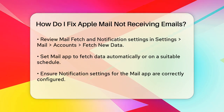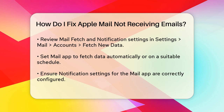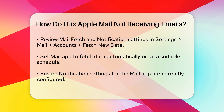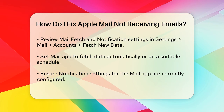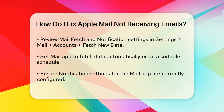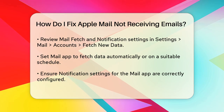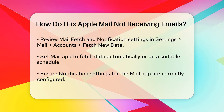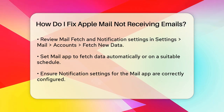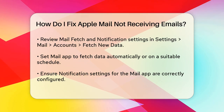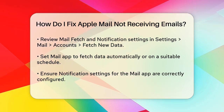Check your mail fetch and notification settings. Go to Settings, Mail, then tap Accounts, and select Fetch New Data. Here, you can choose how often the mail app fetches new data. Make sure the settings are set to Automatically or a schedule that works for you. Also, ensure your notification settings are correct for the mail app by going to Settings, Notifications, Mail.